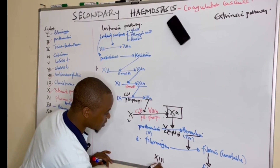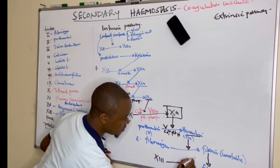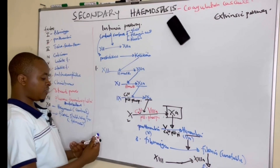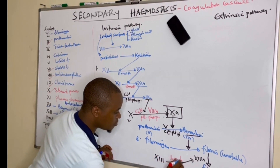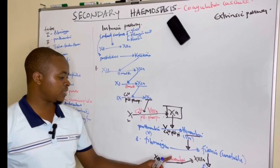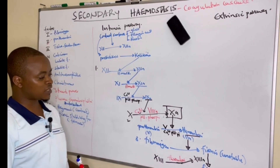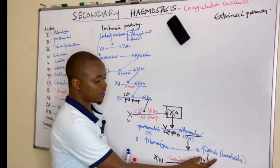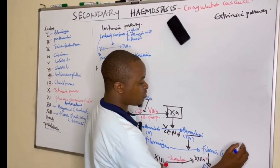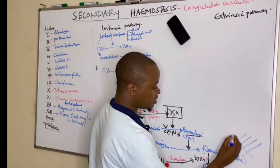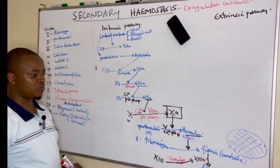We need to stabilize this fibrin, whereby we need the fibrin stabilizing factor to stabilize it. Factor thirteen is activated by thrombin. So thrombin does two roles: it activates the conversion of fibrinogen to fibrin, and at the same time it activates factor thirteen. Activated factor thirteen stabilizes the unstable fibrin mesh into a stable fibrin mesh, which is the one that stabilizes the platelet plug at the injured site, stopping blood from clotting out.